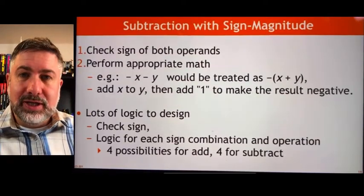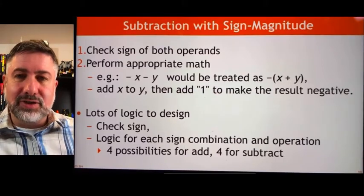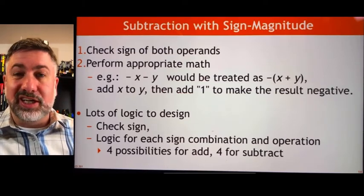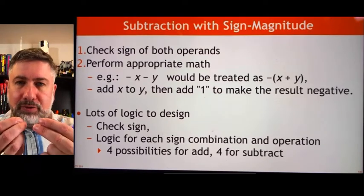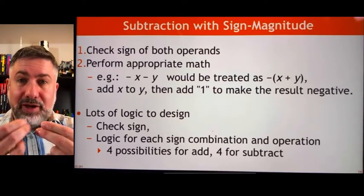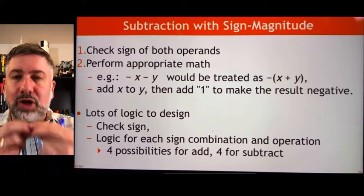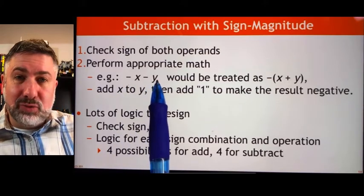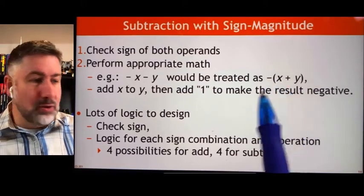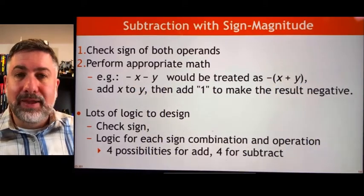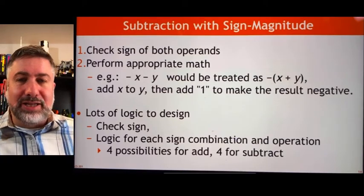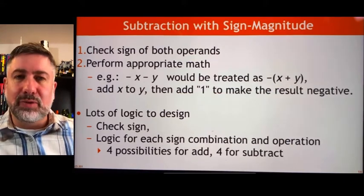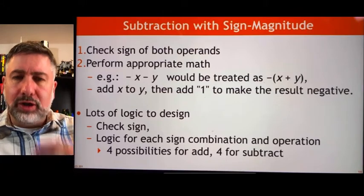The challenge with sign magnitude is that it introduces an enormous amount of complexity. Here's the process for calculating a subtraction or addition using sign magnitude: first, we have to look at both numbers and determine if they're positive or negative, and then based on the signs, decide what operation we're actually going to perform. For example, negative X minus Y is actually negative X plus Y, so although it looks like subtraction, we're actually adding. We need design logic to identify this and perform the correct addition, then allocate the sign — that's a lot of work and a lot of logic to design.